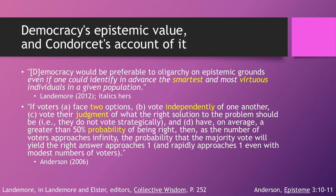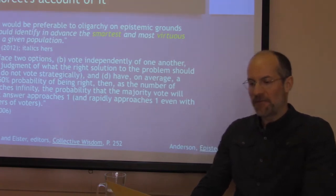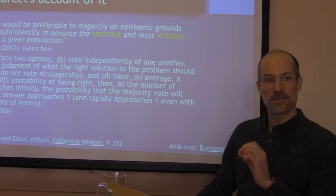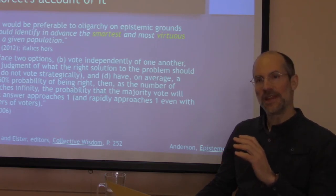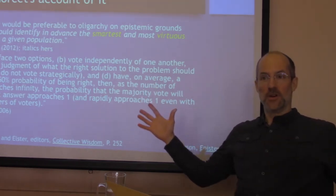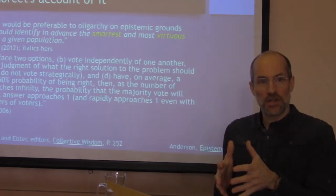What is the Condorcet Jury Theorem? Helene Landemore is another exponent of the epistemological value of democracy, and the way she put it in a recent paper is that democracy would be preferable to oligarchy on epistemic grounds, even if one can identify in advance the smartest and most virtuous individuals in a given population. So even if there's a subset of a population that really wants what's good for everyone and is very smart about what that would involve, you still shouldn't leave it to those individuals.